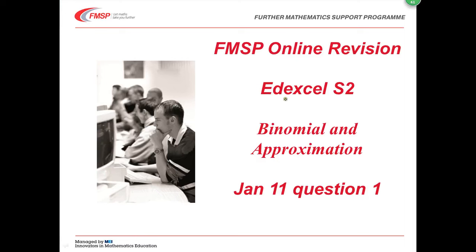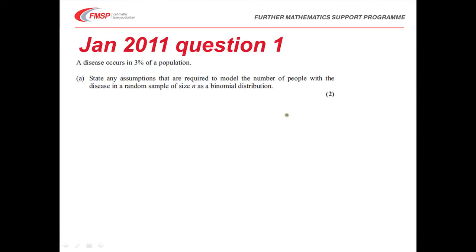In this video we're looking at Edexcel S2, January 2011, question 1. This question is about using the binomial distribution and approximations. A disease occurs in 3% of the population. State any assumptions that are required to model the number of people in a random sample of size n as a binomial.